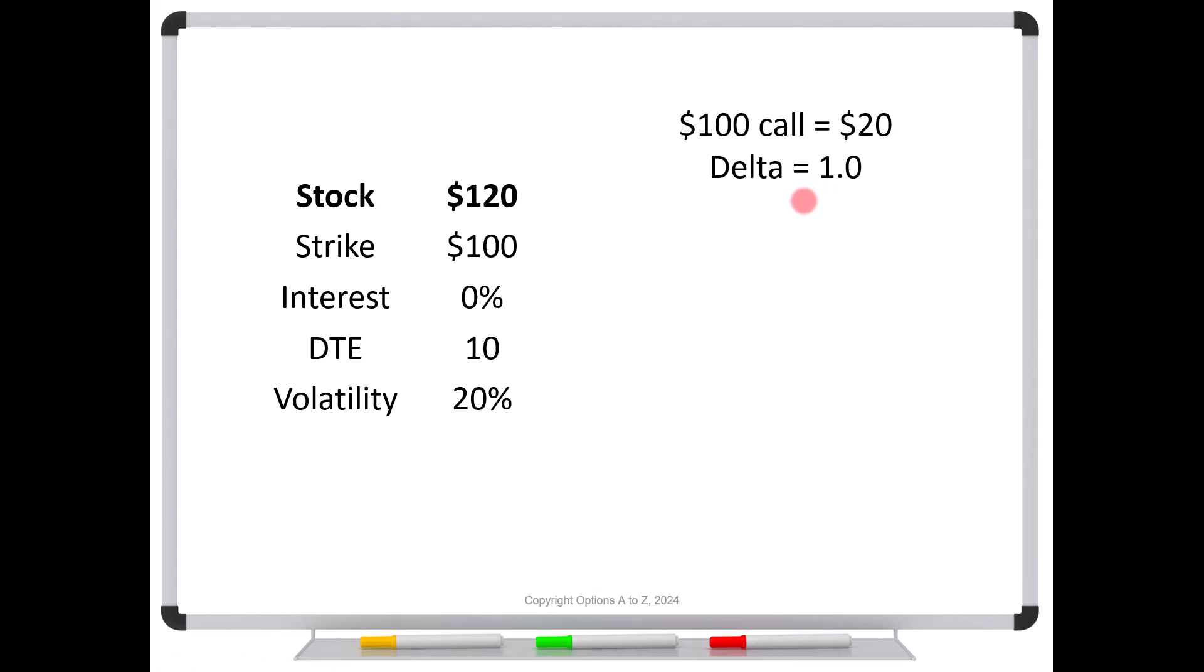But now let's say that the stock rises from 120 up to 121. You would expect that this call would pick up a dollar. And the call should be trading for 21. But you look at your broker's platform, and you see it's trading for $21.10. And you're going, hey, wait a minute, that can't happen because the delta is only one. Well, again, what caused it to move more than $1 was volatility.